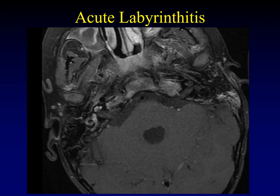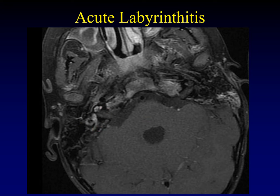Here's an example of labyrinthitis ossificans in its acute phase. You can see abnormal enhancement on this T1-weighted image all through the cochlea, all through the labyrinth, and all through the semicircular canals. This is the earliest stage of the disease, and this is the only sequence on which you'll have findings.